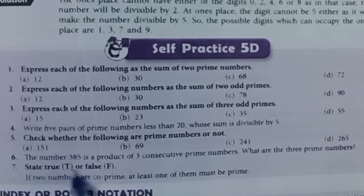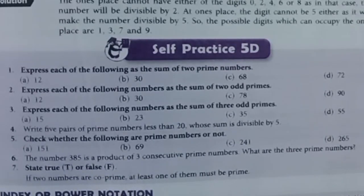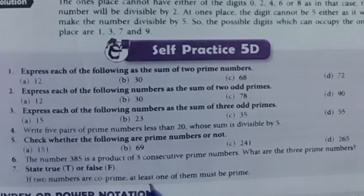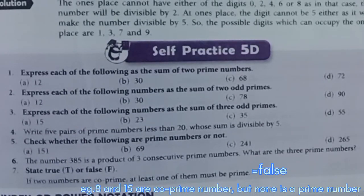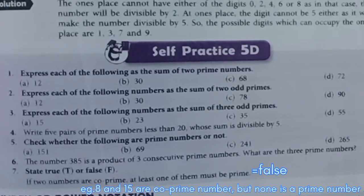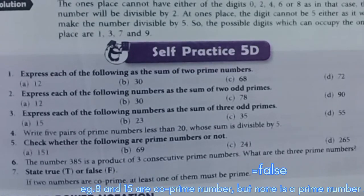Question 7: State true or false. If two numbers are co-prime, at least one of them must be prime. False. Example: 8 and 15 are co-prime numbers but none is a prime number.